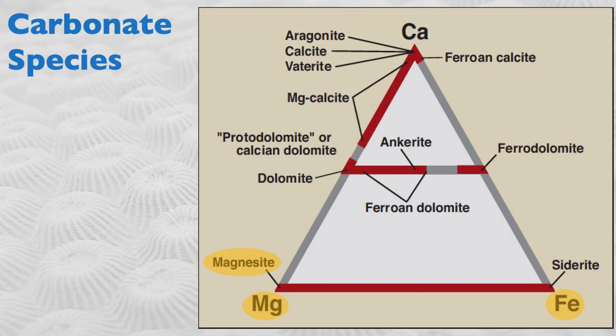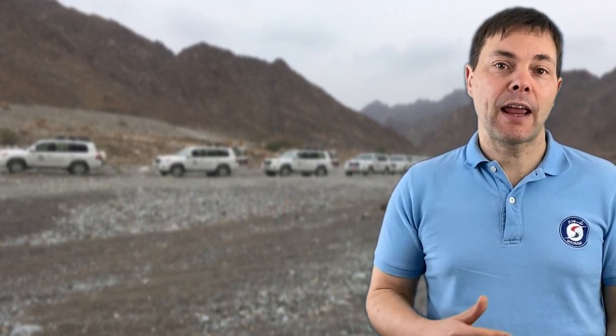What happens when you have an iron-rich mineral? This is known as siderite. Siderite is not common in the ocean; however, it is a mineral that can be quite common in lateritic soils where you have a lot of weathering of minerals. So you tend to find siderite and bauxite in those settings.